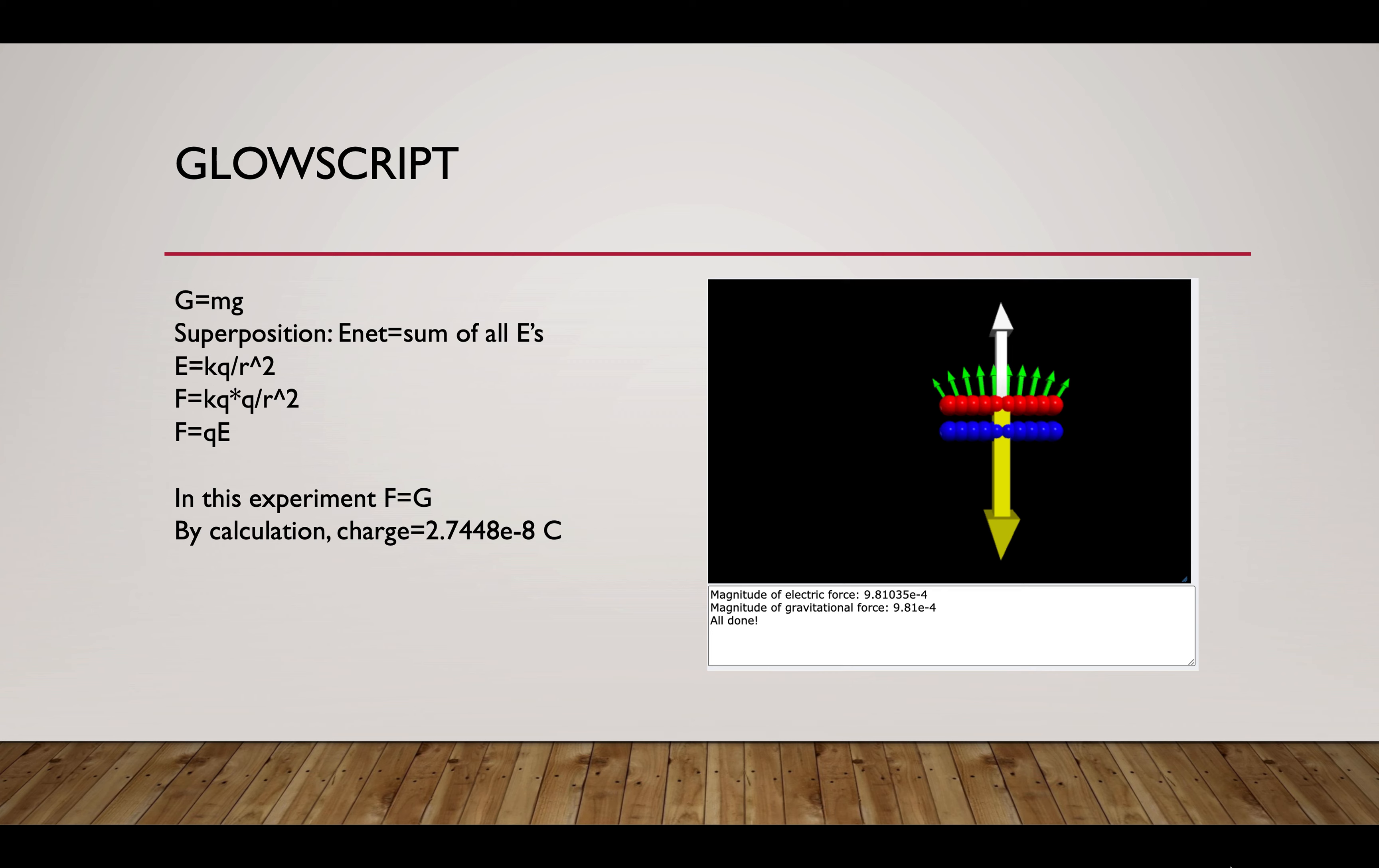And F equals K times Q times another Q because it is from both electrons divided by R squared. So we have F equals QE. From this experiment, as in the condition, we know that the upward tape is floating in the air. We know that F equals G in this condition. And by calculation, we know that our charge is 2.7448 times 10 to the negative 8th power.